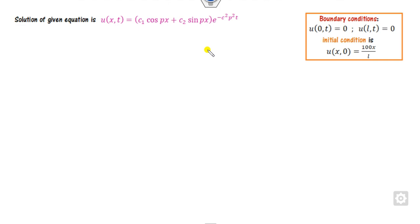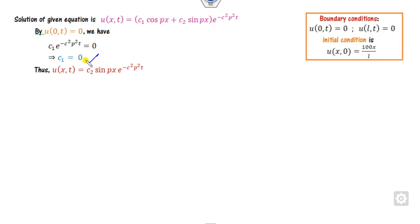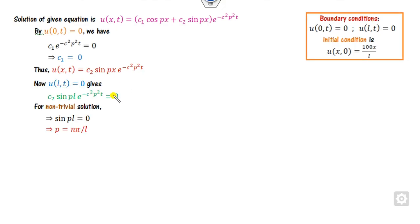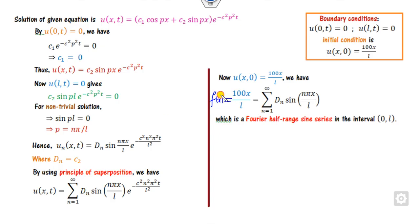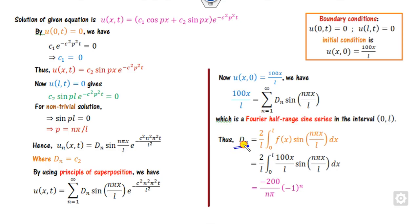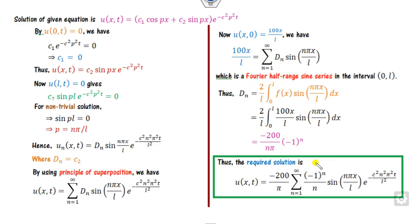Since the initial temperature 100x/L is a polynomial and the boundary conditions are zero, we use Type 2 approach. Starting from the heat equation solution, substituting the first boundary condition gives c1 equals zero. Substituting u(L, t) gives p equals nπ/L. Applying the superposition principle and the initial condition u(x,0) = 100x/L, since this involves a sine form, we use the Fourier half-range sine series to compute b_n, which equals d_n. Integrating by parts gives the answer, and substituting d_n into the expression gives the required solution.